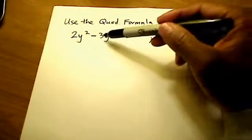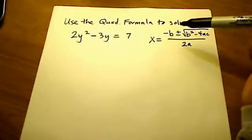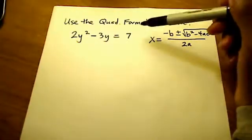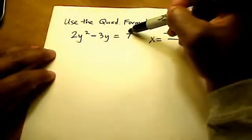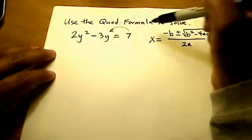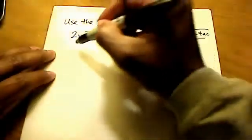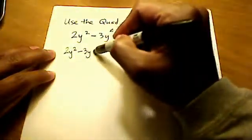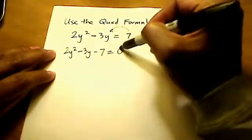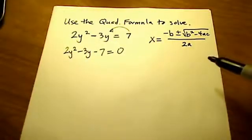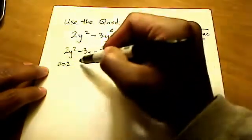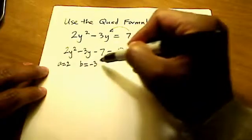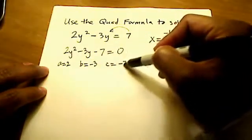So back to our quadratic equation, we need to know what a, b, and c are. To do that, this equation should really be set equal to 0. So let's bring that 7 over to the other side first, which then makes the equation 2y squared minus 3y minus 7 equals 0. Now we can easily see that a is 2, b is negative 3, and c is negative 7.